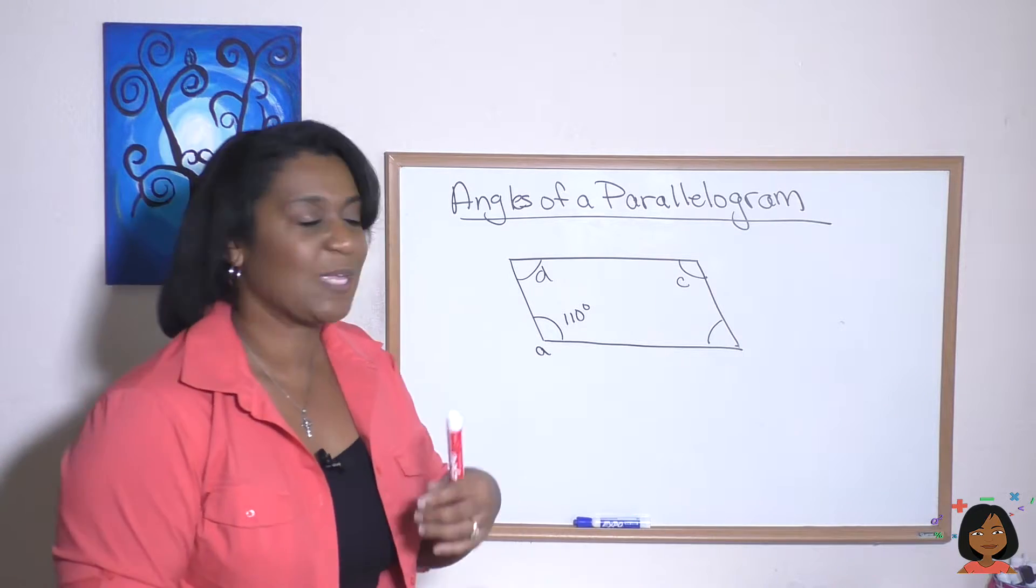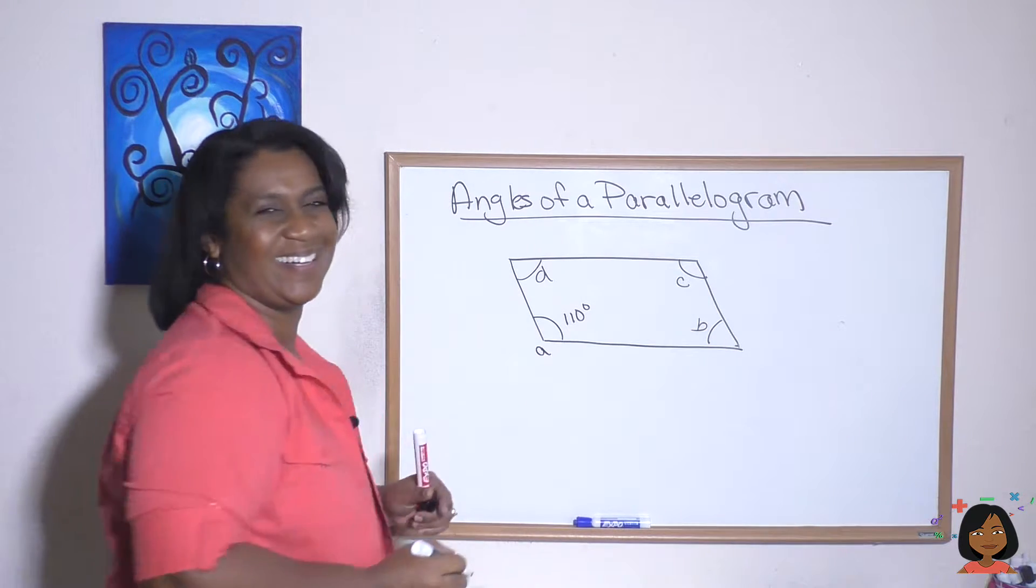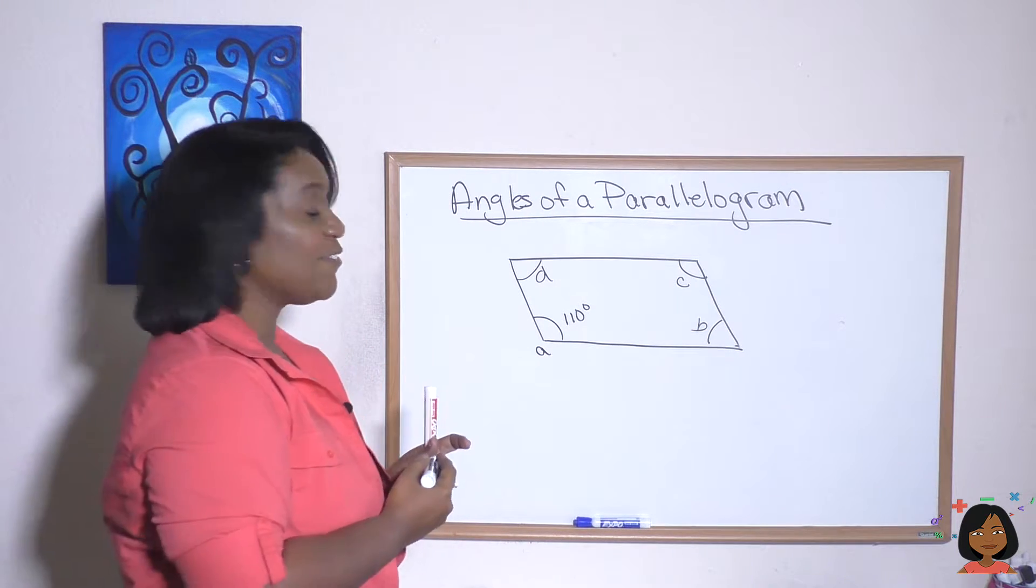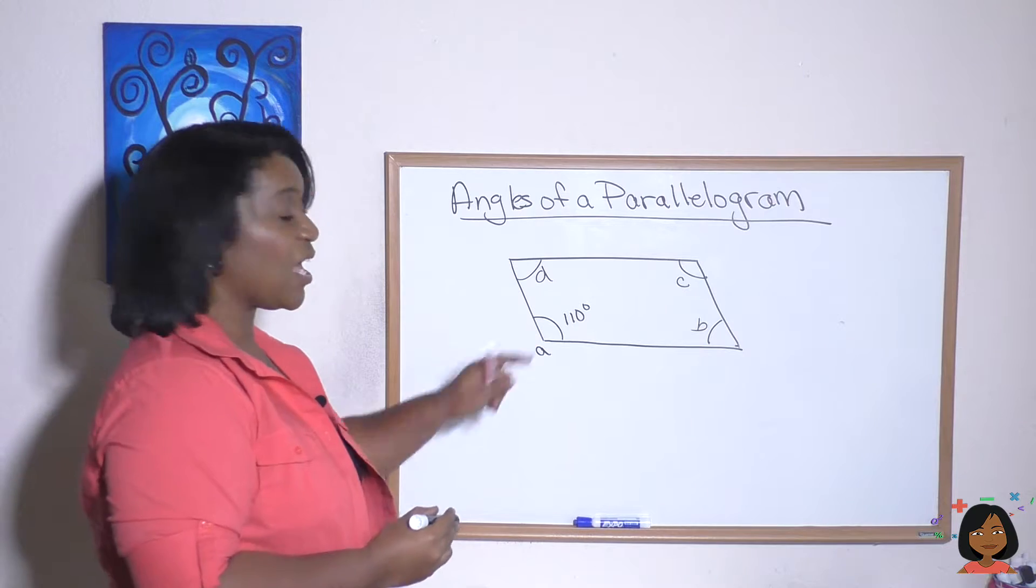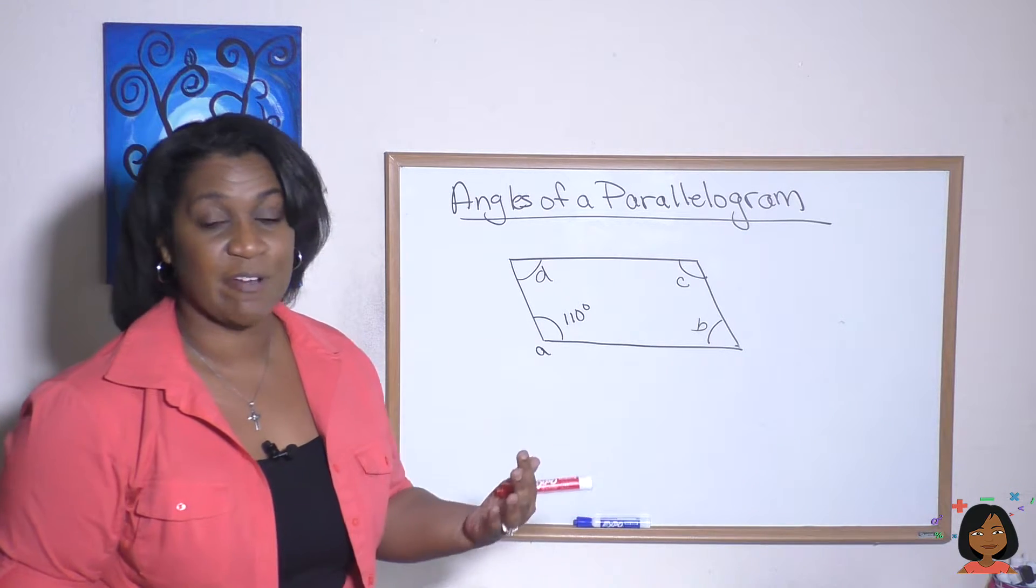So angles of a parallelogram. There's two things to keep in mind. Let's take a look at this example. I'm going to write my B in right there. So they've given us one angle, which is 110 degrees. How do we find the measures of the other angles?